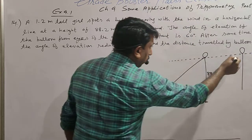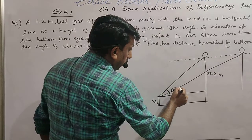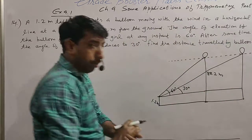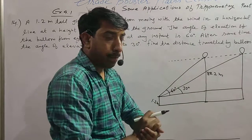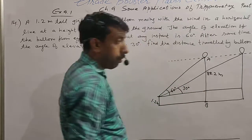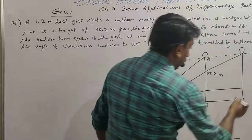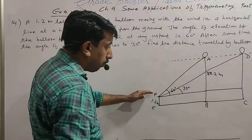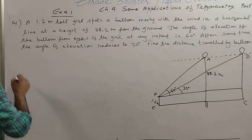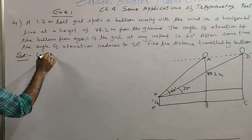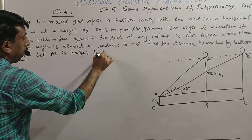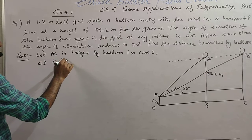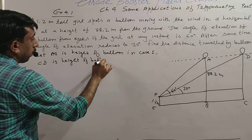After some time, the angle of the balloon changes to 30 degrees. AB is the height of the balloon in Case 1, and CD is the height of the balloon after travelling in Case 2.